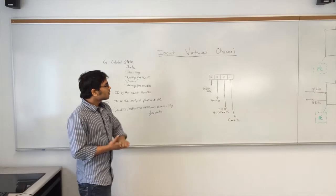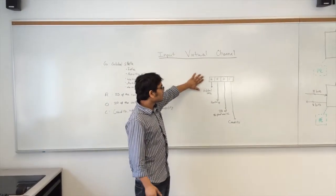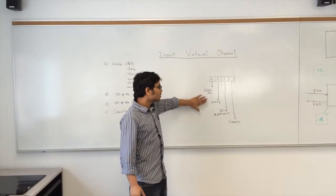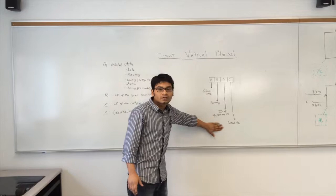The different fields in the state register are the global state, the routing, the ID of the output port, and the credits.